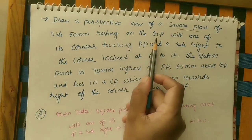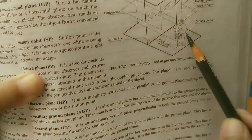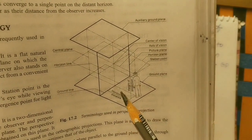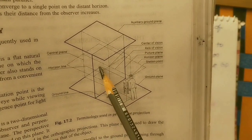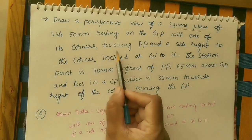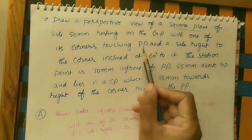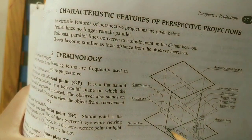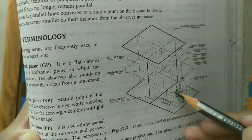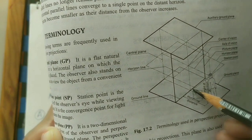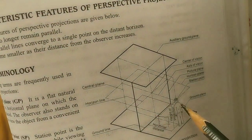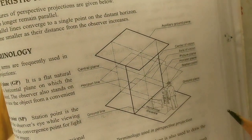Remember: GP means ground plane, PP means picture plane, CP means central plane. In perspective views, the observer watches the plane. The square plane is resting on the ground plane, with one of its corners touching the picture plane. The picture plane PP is in front of the observer, and one corner of the square is touching it.